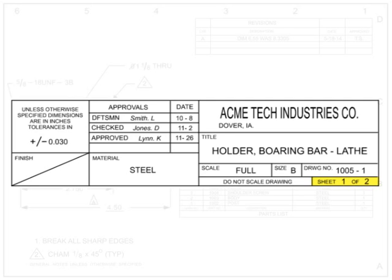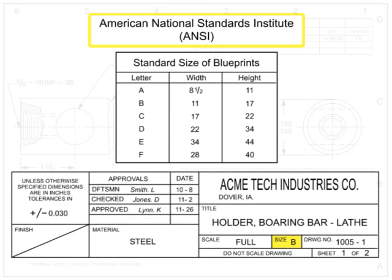Sheet numbering is critical when working on complex parts, as they may require several sheets of drawings. The first number indicates which sheet is being viewed; the second indicates how many sheets there are total. The size of the drawing indicates what size paper the drawing should be printed on to be true to scale. The most commonly used standard in the United States is the American National Standards Institute, ANSI, which is also required by the ASME Y14 drawing standard. The farther in the alphabet the letter, the larger the drawing size.